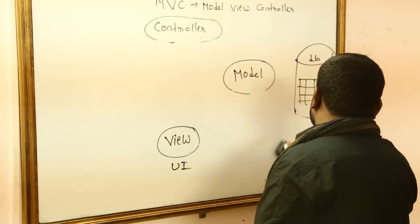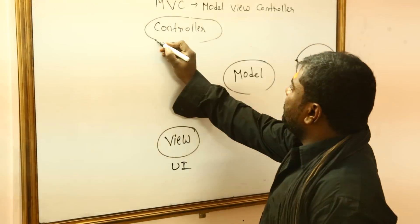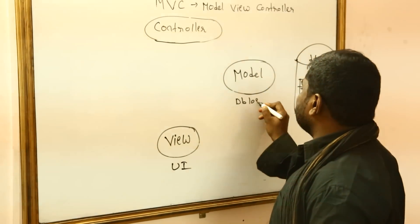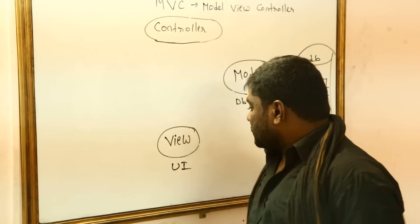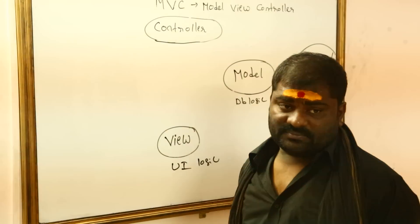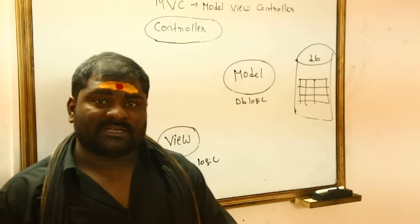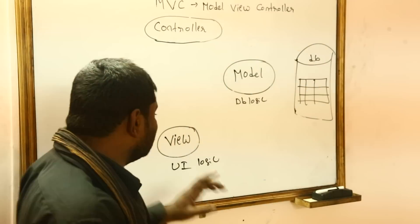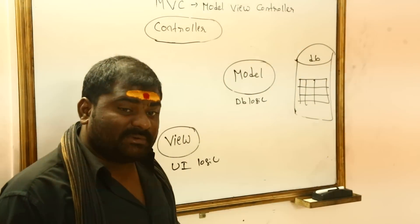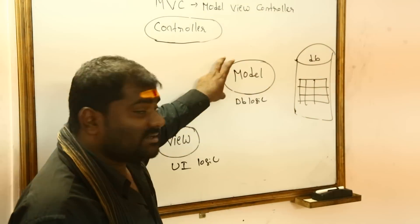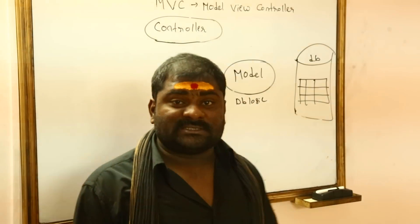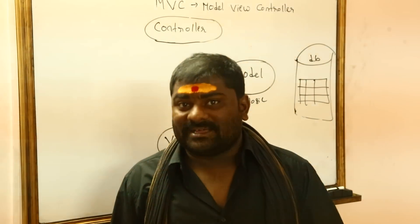In MVC there is controller, view, and model. The database logic you write inside the model. The user interface logic you write inside the view — for example, if you want to design a login page, you write that code in the view. If you want to communicate with the database, you write that code in the model.